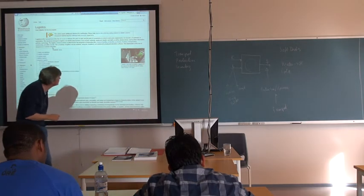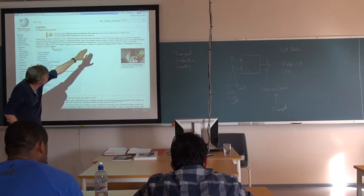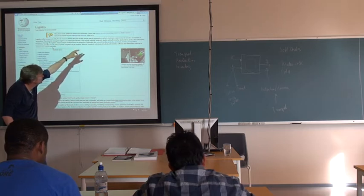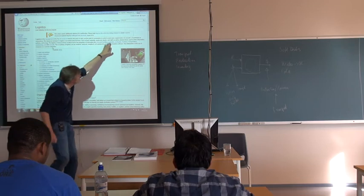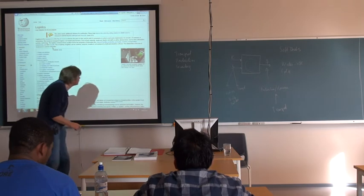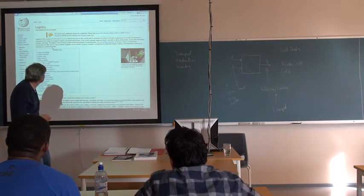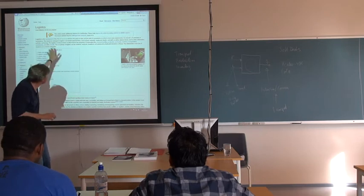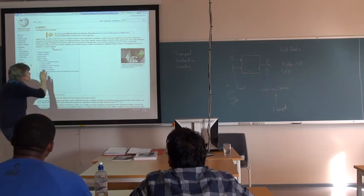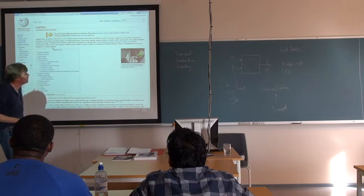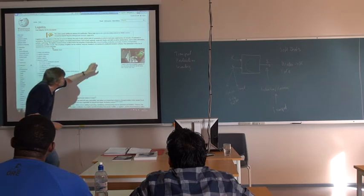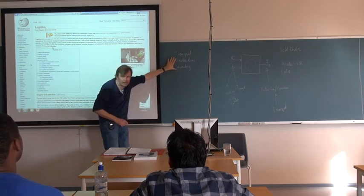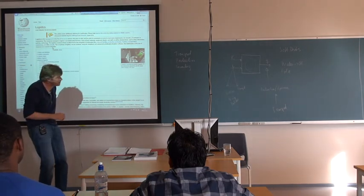The Wikipedia definition is a bit more extended: between the point of origin and the point of consumption in order to meet requirements of customers or corporations. The resources managed can include physical items such as food, materials, equipment, liquids, and staff, as well as abstract items such as time, information, and energy. We could add entertainment here as well. The logistics of physical items usually involves integration of information flow, material handling, production, packaging, inventory, and transportation. I choose to keep it relatively simple and decompose it into three part subjects: transportation, production, and inventory.